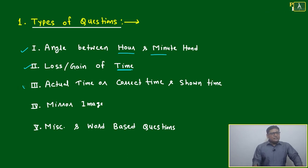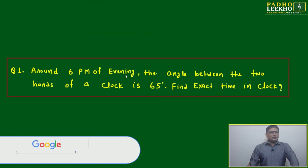Some complexity you can expect when calculating actual time, correct time, or shown time in the clock. The fourth type is based on mirror images, and the fifth is miscellaneous, word-based, or story-based questions. We'll try to go through different questions related to these six types.